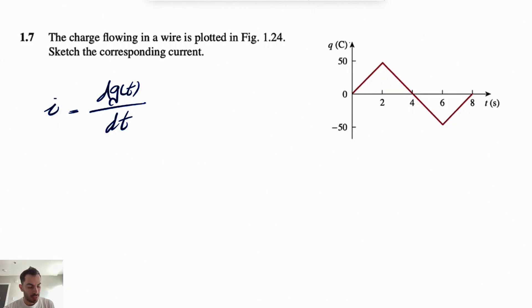And if we look at this graph on the right-hand side, we have the charge over time, which means the slope of this graph is going to give us the current that we are looking for, and the unit is going to be coulombs per second or amps.